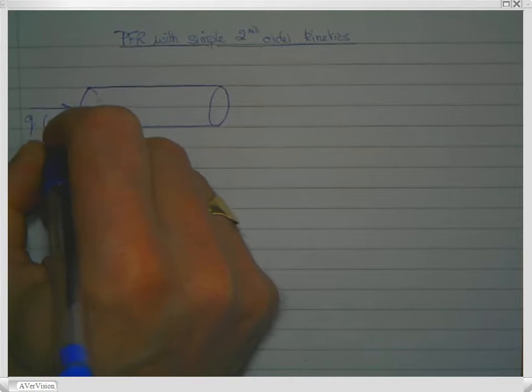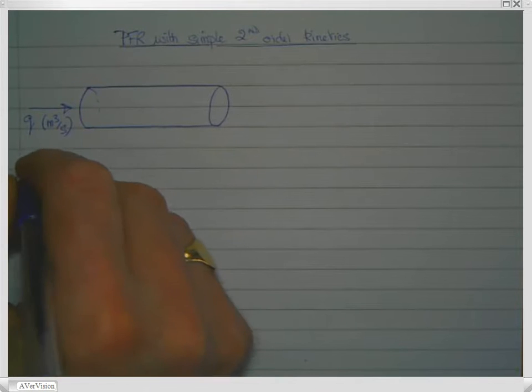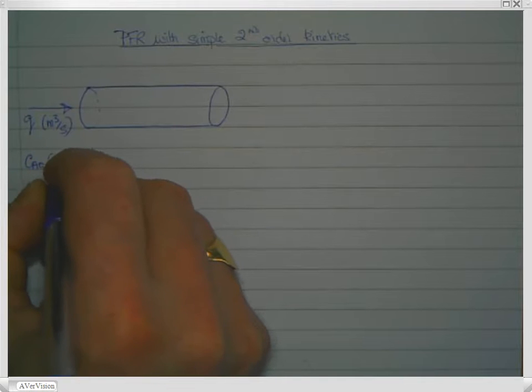Q meters cubed per second, that has a concentration of a starting material A, Ca0 moles per cubic meter.